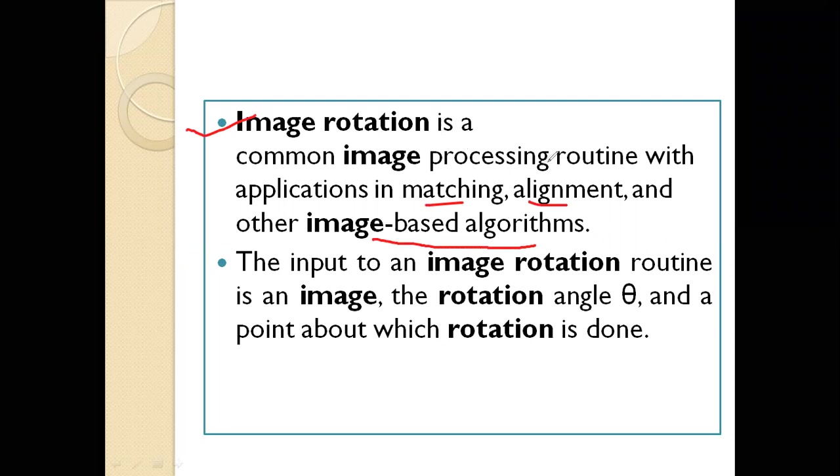The input to an image rotation will be the original image, the rotation angle by which we will perform that rotation, and a point about which the rotation will be done. So these are the three inputs: original image, rotation angle, and the point by which the rotation will be done.